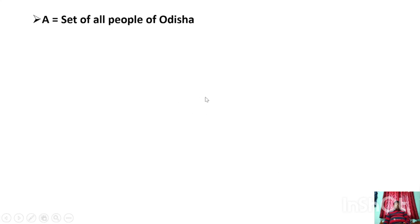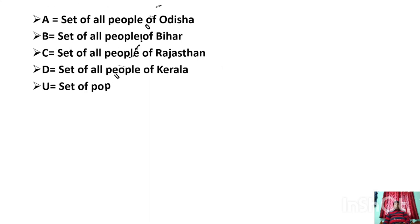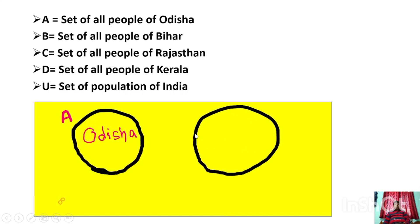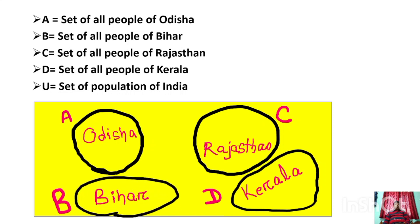Another interesting example: set A is the set of all people of Odisha, set B is the set of all people in another state, set C is the set of all people of Rajasthan, set D is the set of all people of Kerala, and set E is the set of the population of India. You can clearly understand the universal set from the Venn diagram — the universal set is represented by a rectangle, and the subsets are represented by oval structures inside it.